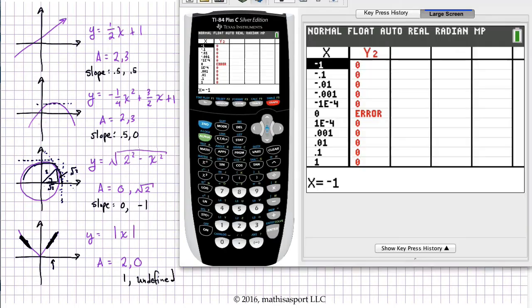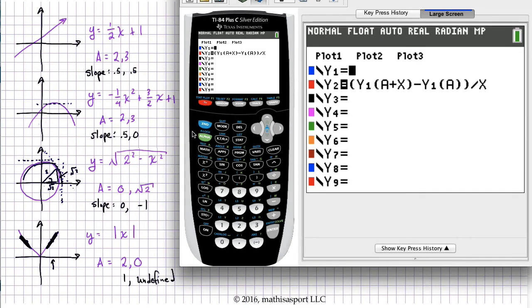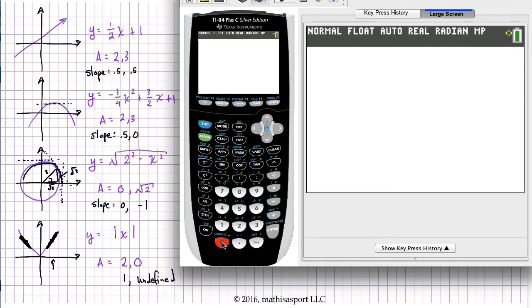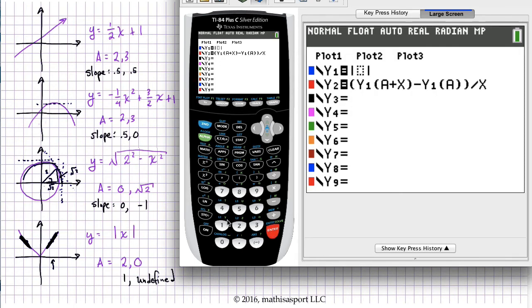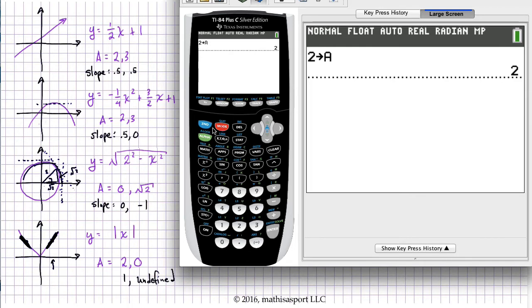And I just want to go over to the calculator to show you what that looks like. Hopefully you already did this. So I'm just going to put in the absolute value of x. Now let's run the table. Let's put in a 0 for A. And now let's run the table.